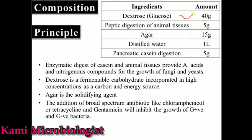This media contains dextrose, which is actually fungal glucose, at 40 grams per liter. We have digest of animal tissue at 5 grams per liter, agar at 15 grams per liter, and pancreatic casein digest at 5 grams per liter.